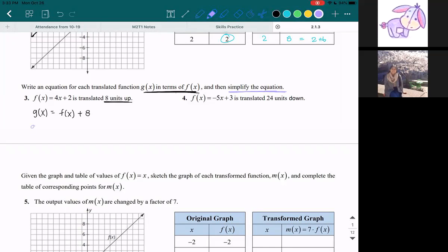So I'm going to rewrite the g(x) equation now. So f(x) is equal to, well f(x) is the same thing as 4x + 2, I got that from right here. f(x) = 4x + 2. So I just replaced the f(x) with 4x + 2. And now I'm going to write plus 8.